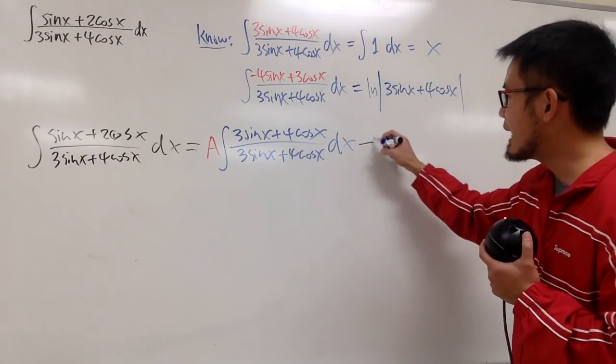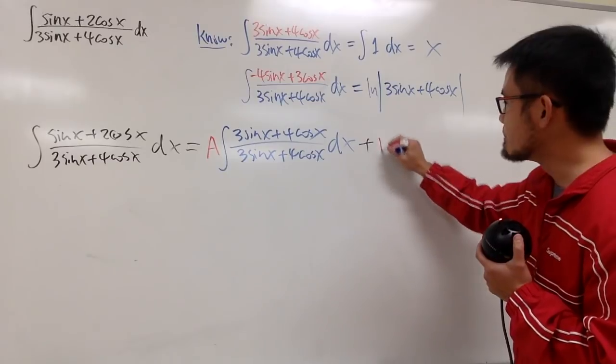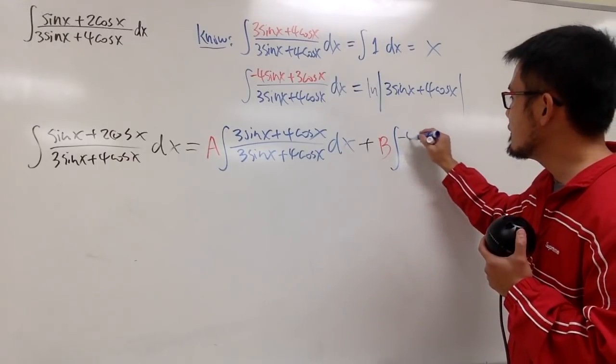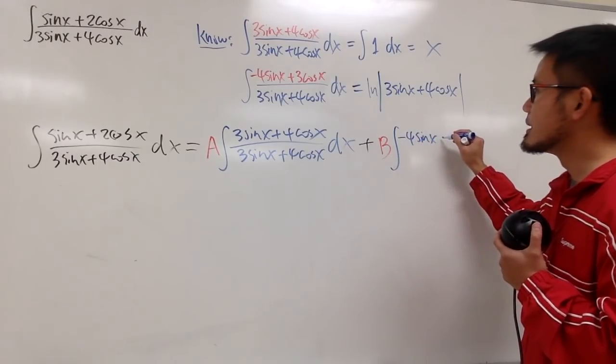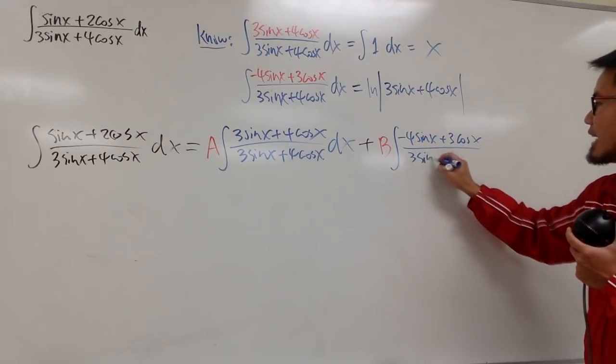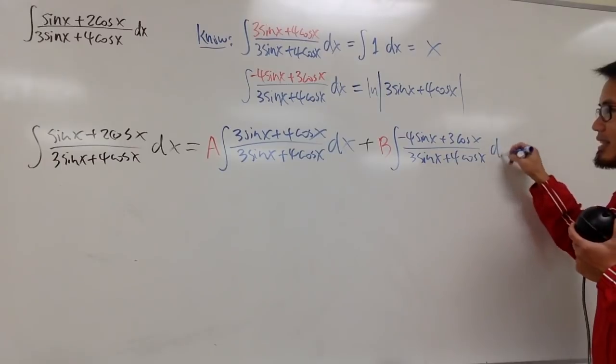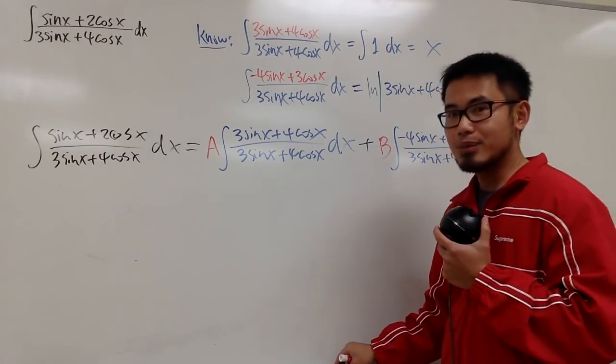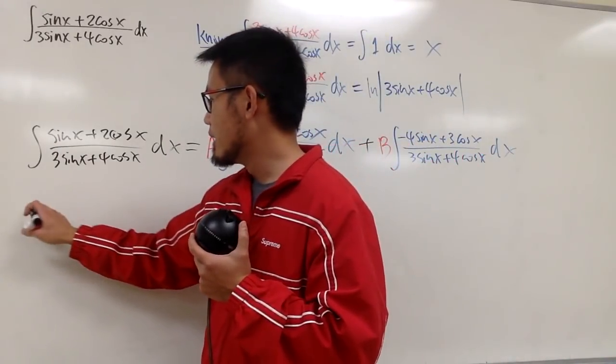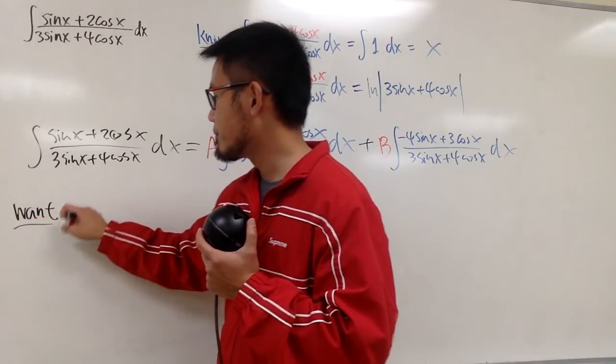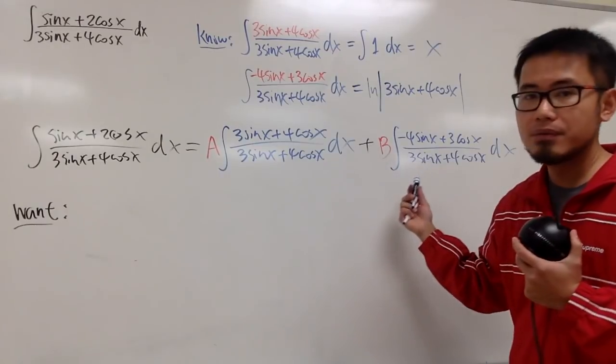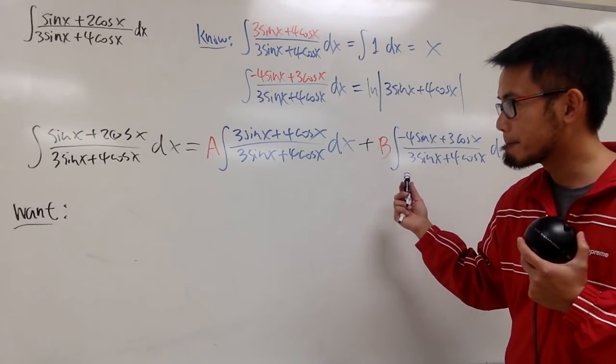Anyway, this is the first part, and then we'll be adding this with another constant multiple of that integral. So that will be the integral of negative 4 sine x plus 3 cosine x over 3 sine x plus 4 cosine x dx. And what do we do? Well, let's just pay attention to the following. Let's just make this happen. Of course, we're just integrating, and we just care about to find the a and b values.